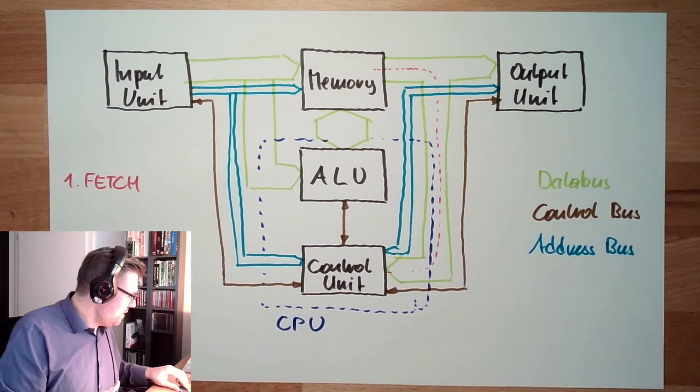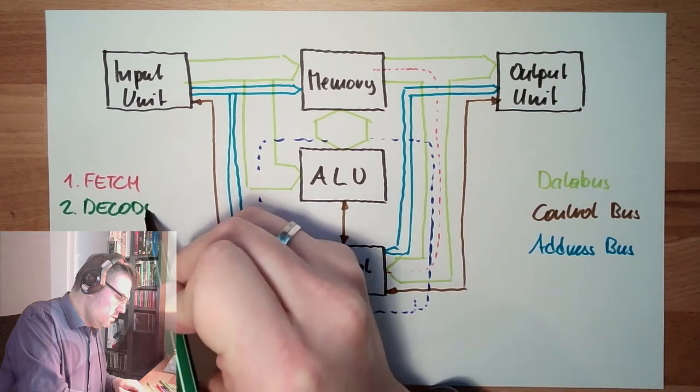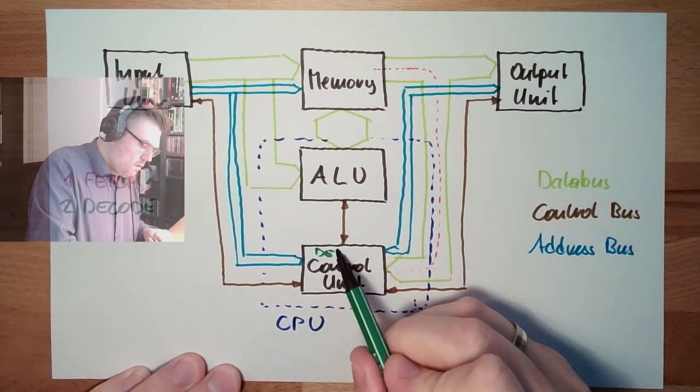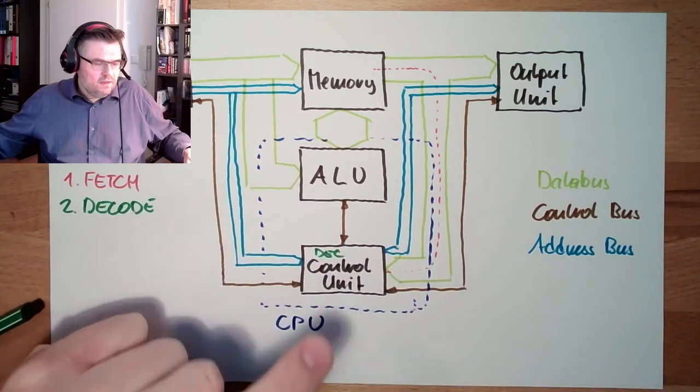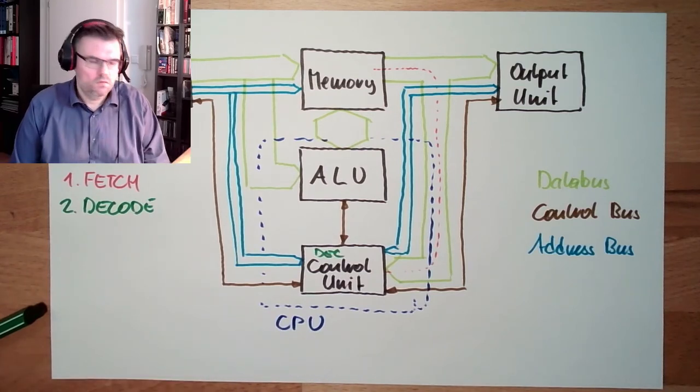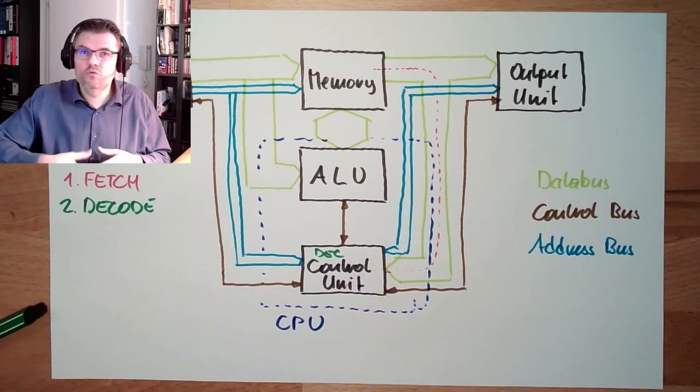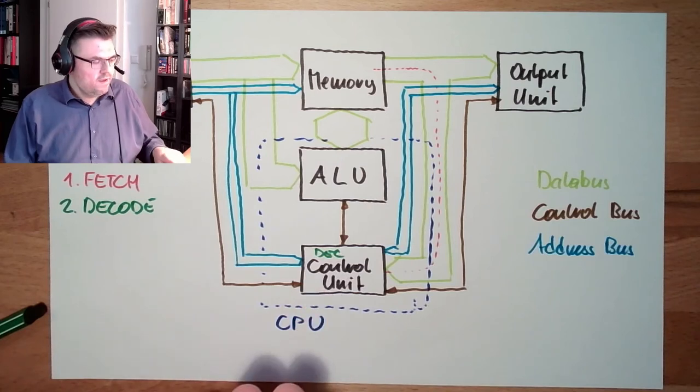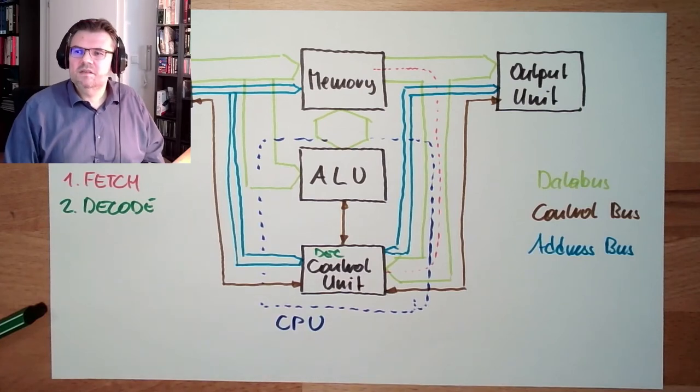The second thing which is happening is the so-called decode. The control unit is decoding the command. How is it decoding? It needs to understand the command and needs to tell the arithmetic logic unit what to do. Are numbers to summarize? Are numbers to compare? Should we just go to another command? Something like this. It is decoded. If the decode needs to have some additional operands, these operands will be loaded.